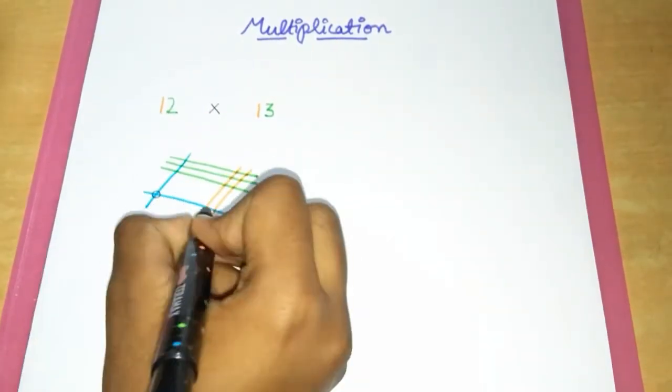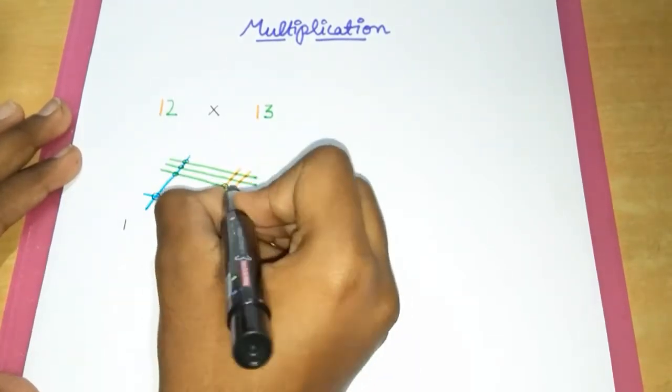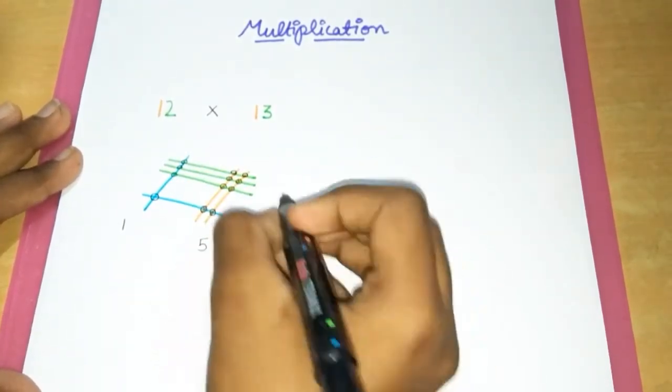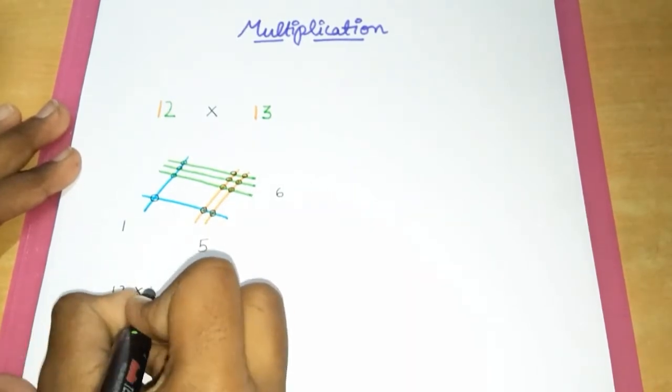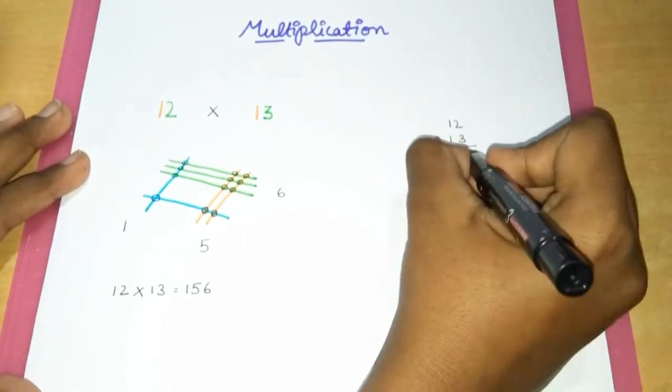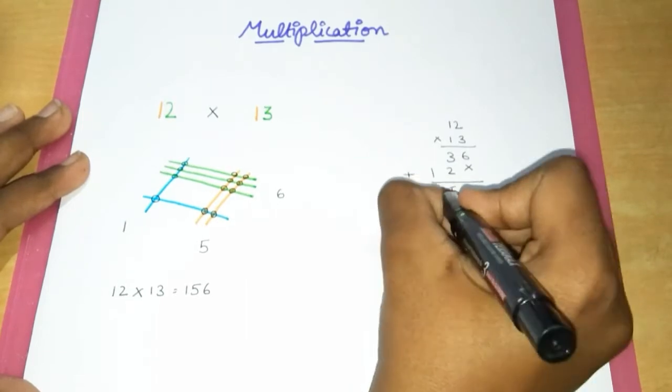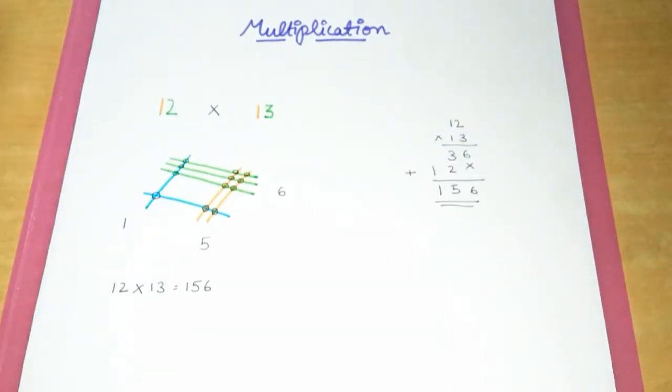When we consider the first row, we have only one dot. Then in the middle row we have two and three dots, which has to be added to five. On the last row we have six dots, which totally makes up 156. To cross-check, let's multiply with our normal multiplication method. Great! When we finally look at both the methods' answers, we get to know that both answers are the same.